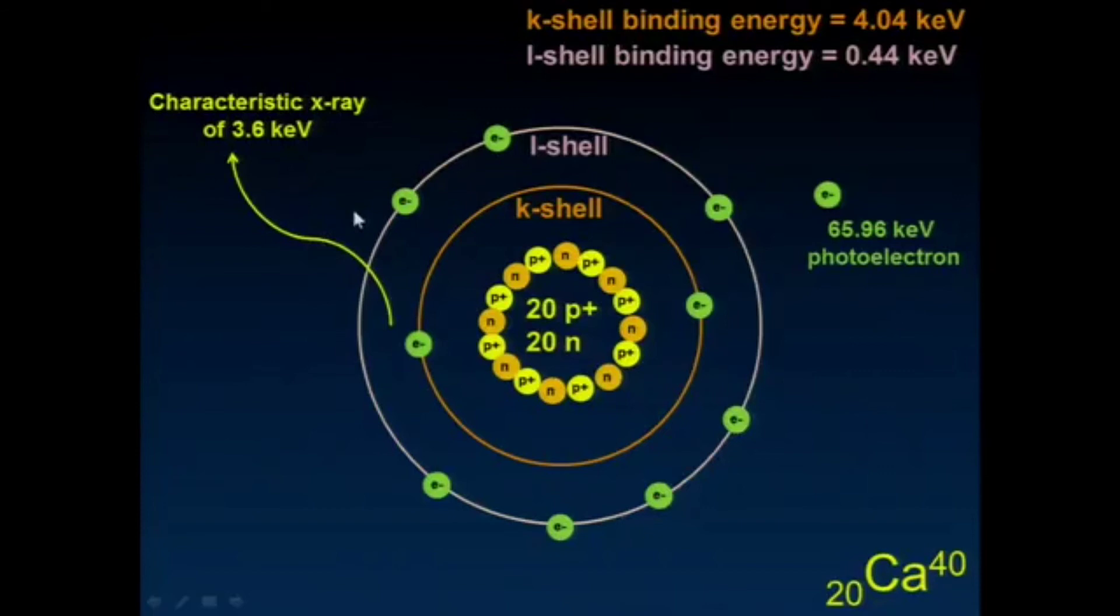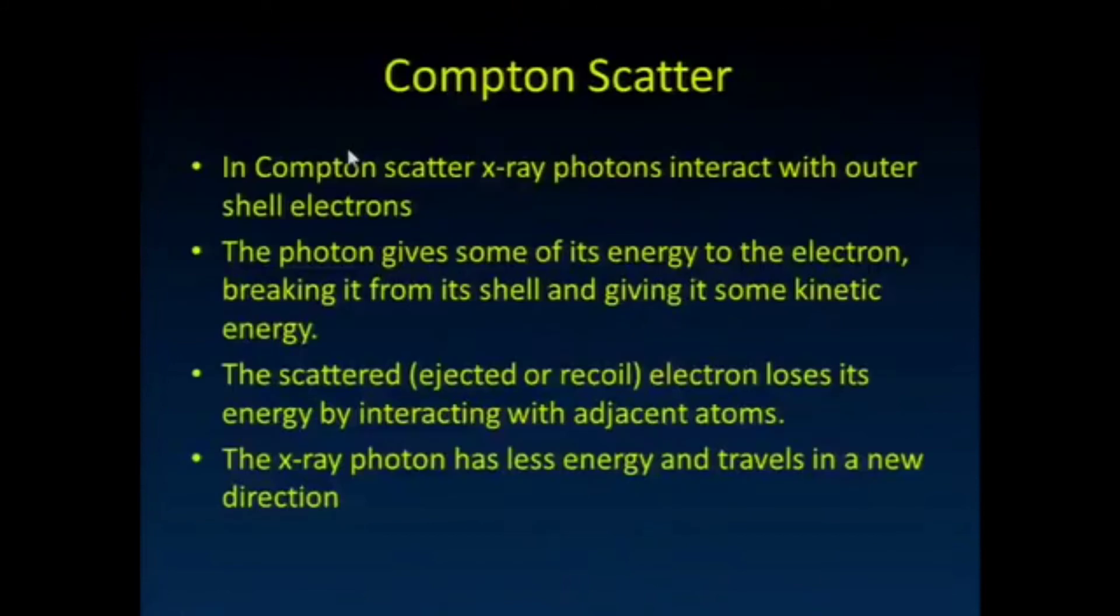In the body, we do still get characteristic or Auger electron production. But notice it's quite low energy. This is 3.6 keV. It's just kind of above the visible, way above the visible, but much lower than things that would escape the body.